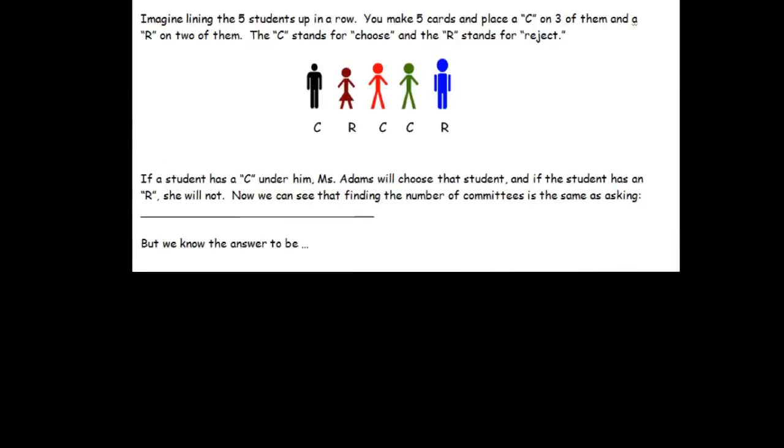Imagine lining the five students up in a row. We're picking a committee of three people from a possible five. We make five cards, we put a C on three of them and an R on two of them. We say that C is going to stand for choose and R stands for reject. If I place the card below the person and that card is a C, that means I'm going to choose that person for my committee.